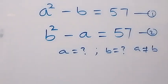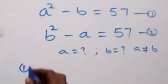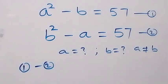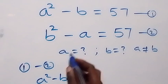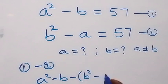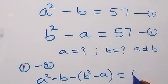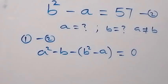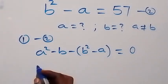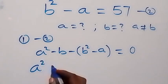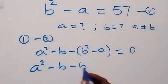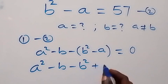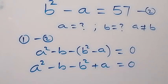Then subtract equation 2 from equation 1. We have equation 1 minus 2, which becomes on the left-hand side: a squared minus b, then minus bracket b squared minus a, which equals 57 minus 57, that's 0. Using the minus to expand the bracket, this becomes a squared minus b minus b squared plus a equals 0.